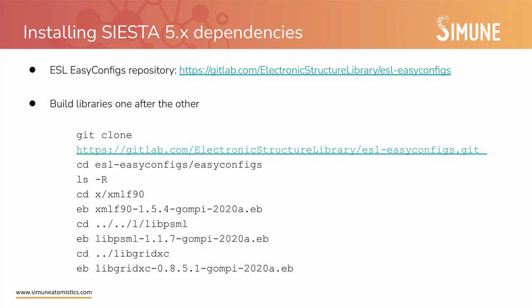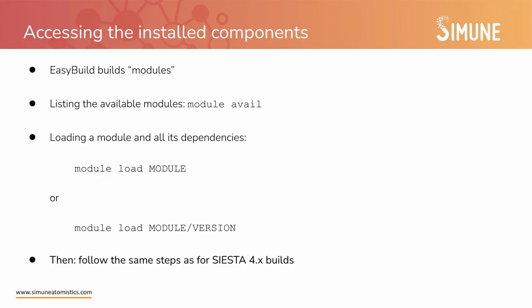Once you have these common dependencies installed, you can go to the specific dependencies of Siesta 5. For this, the ESL provides a repository of easyconfig files, and you can use it to build libraries like xmlf90, libpsml, or libgridxc. Before compiling Siesta, you need to access the components that have been installed. EasyBuild builds modules in the sense of LMOD. To know what modules are available, you just type `module available` and you will get a list. Then to load the modules you need, you type `module load` followed by the name of the module, or with a specific version if you want to be more precise. Once this is done, you can build Siesta as we explained in the Siesta 4 case.